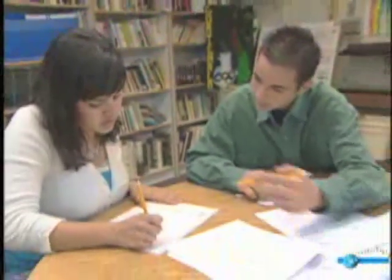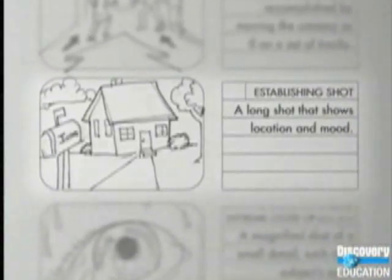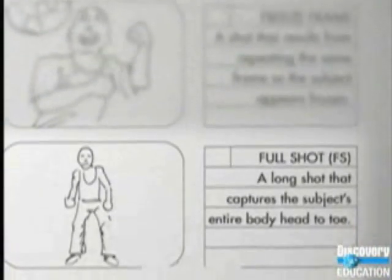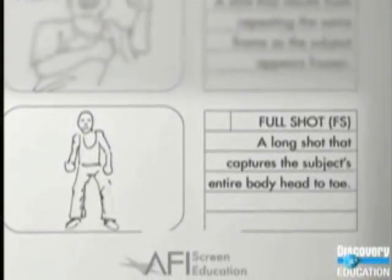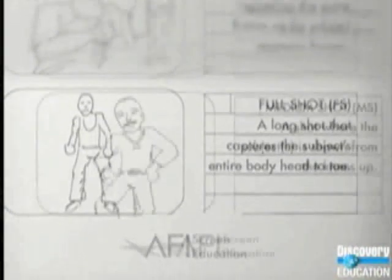You don't have to be a great artist to create an effective storyboard — they're just sketches. Stick figures work just as well as a fully rendered drawing of a person. All you need to do is convey in the simplest terms possible what the camera is looking at at that moment. An establishing shot is a long shot that shows location and mood. A full shot is a long shot that captures the character from head to toe.